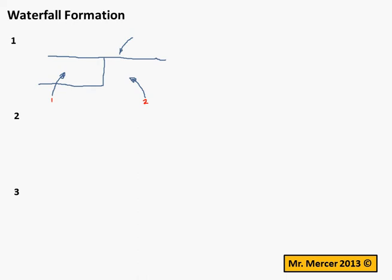At label number three, you want to indicate that the river flowing over the top of this structure of hard and soft rock causes differential erosion to take place. Differential erosion is when erosion takes place at two different speeds.